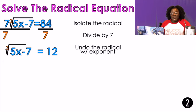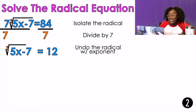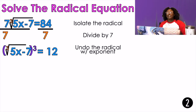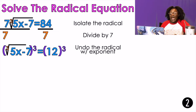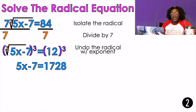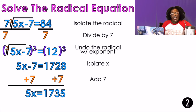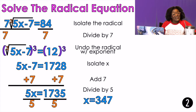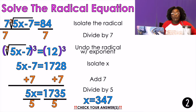Now that the 7 is gone, I have to undo the radical. It is a cube root, so I can't square it — I have to cube it. If I do it on one side, I have to do it to the other. So 5x minus 7 equals 1728, because 12 cubed is 1728. Now I solve like normal: add 7 to both sides, getting 5x equals 1735, then divide by 5, giving x equals 347. That's a big number, but it is your answer. You need to check your answer — plug that thing in.